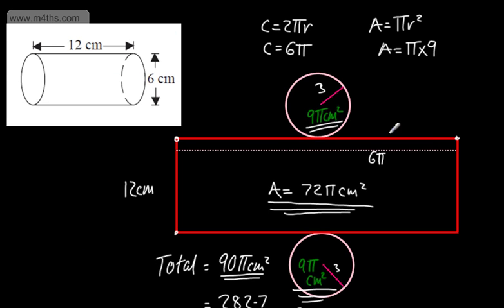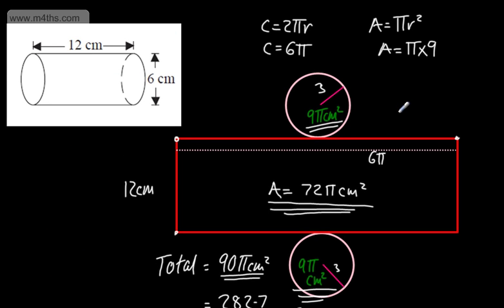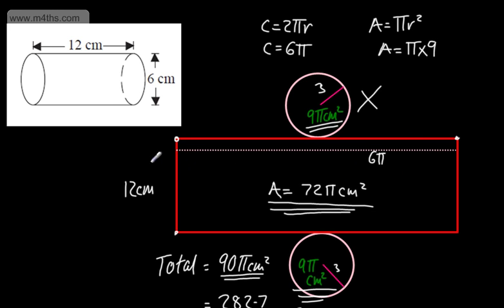So if this was an open-topped cylinder, we would just take off one of the 9 pi's. If it's closed-topped, we add both. So we're finding the area of the two circles on the end, then finding the length of this particular section, finding the area of the rectangle, and adding them together. As you can see with that one, it certainly does help with a sketch.